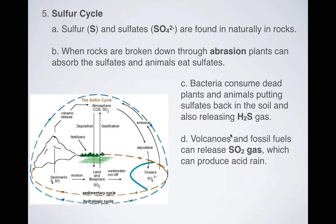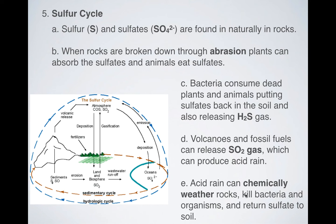Now, another important thing, volcanoes and fossil fuels can release SO2 gas, which then can make acid rain. And then last but not least, acid rain can chemically weather rocks, kill bacteria and organisms, and then also as a byproduct, return some of those sulfates back to the soil and the process repeats again.